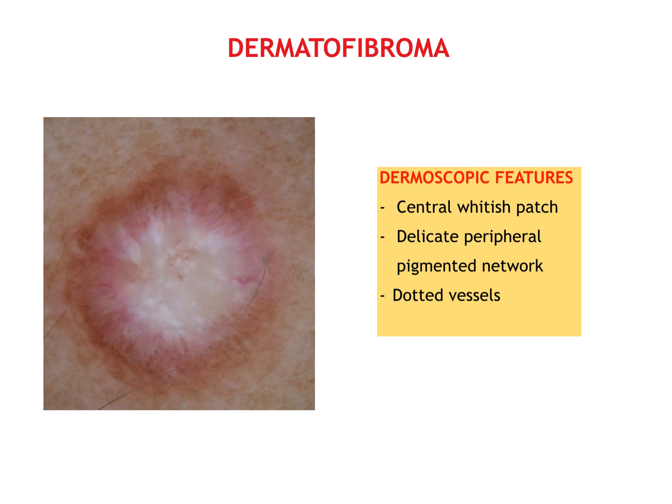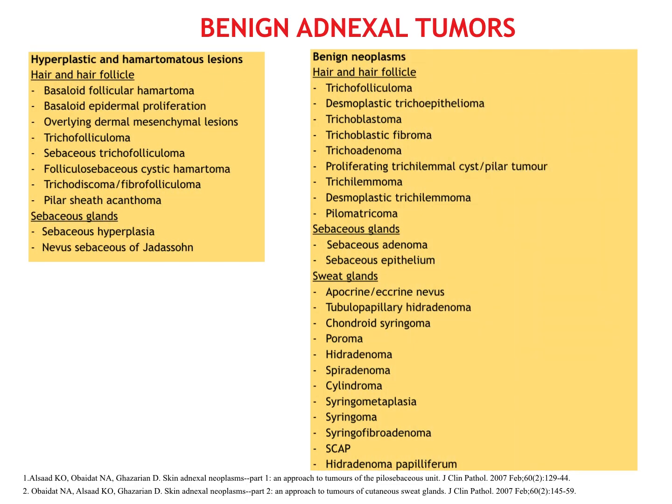Another benign pink lesion is dermatofibroma, recognizable at dermoscopy thanks to the central white patch often dotted with point vessels and surrounded by a delicate pseudonetwork. Here is a complete list of benign adnexal cutaneous tumors, and in the following slides I am going to give you some useful tips to identify a few of them.